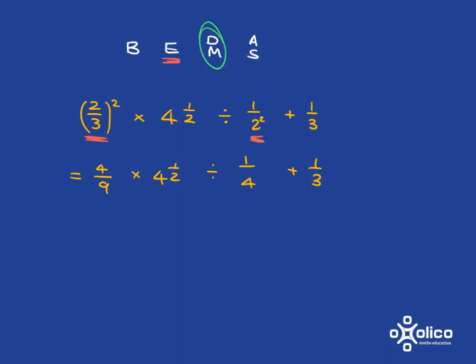BEDMAS then tells us we must look for division and multiplication. And if there's both division and multiplication, they're at the same level, so we just work from left to right.